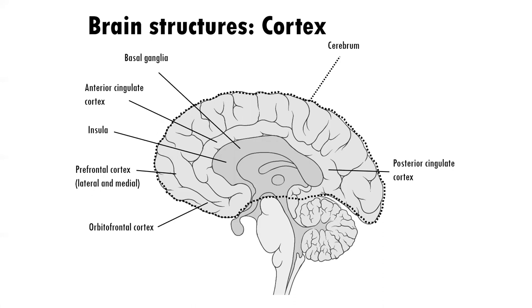The insula is associated with awareness of others and empathy, as well as awareness of one's own body — interoception. The posterior cingulate cortex is associated with self-referential thought, or thinking about thinking, and has an important role in the default mode network. The basal ganglia is known as one of the major dopaminergic pieces of the circuit, housing structures such as the nucleus accumbens, which is very associated with how dopamine is produced and secreted. When we talk about addiction, we often talk about structures of the basal ganglia.